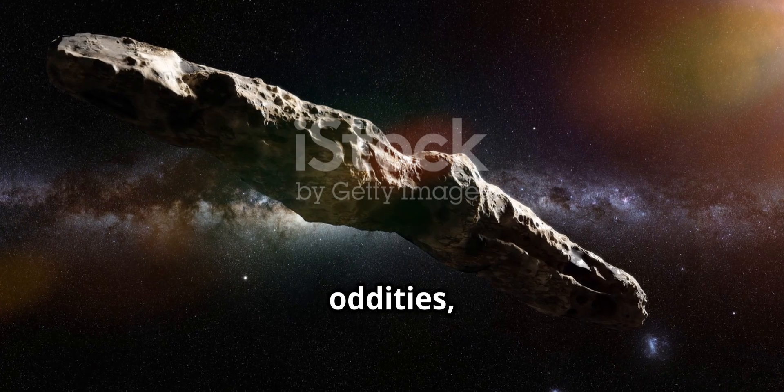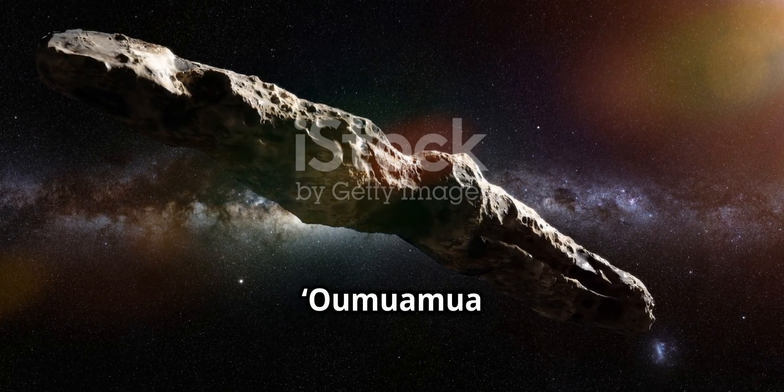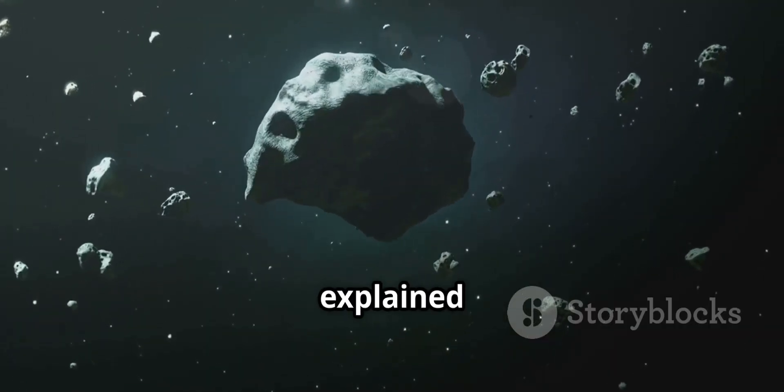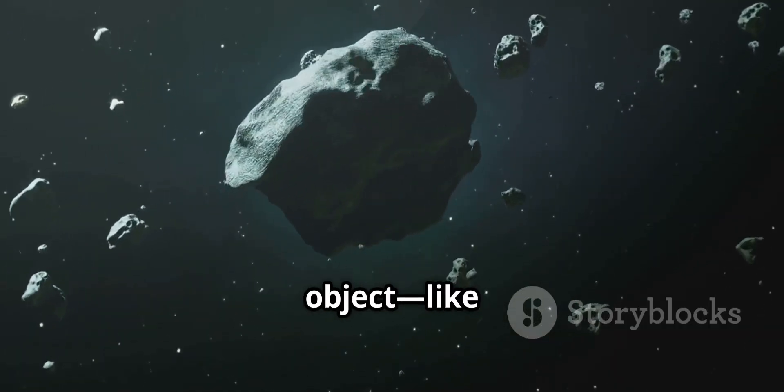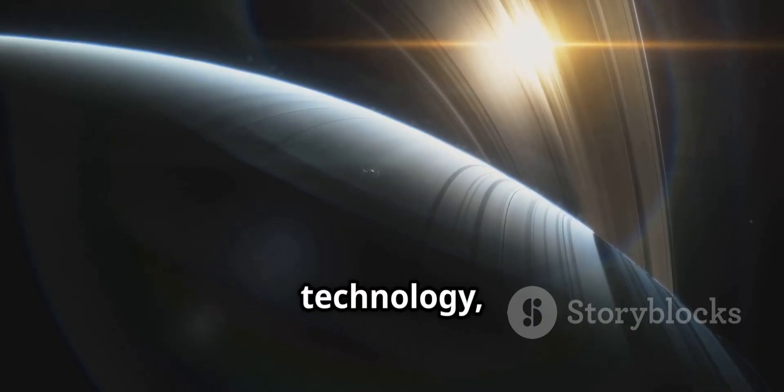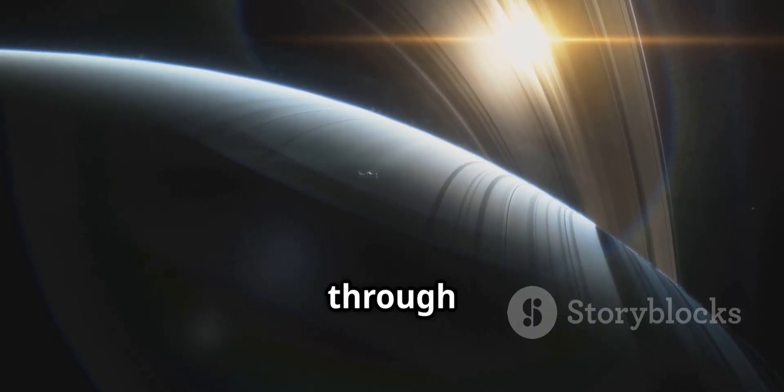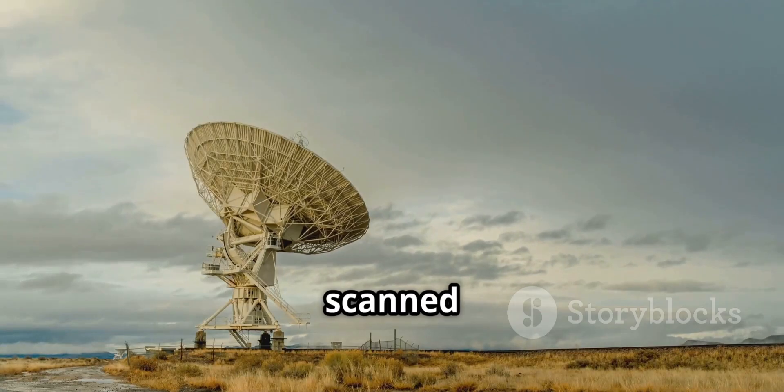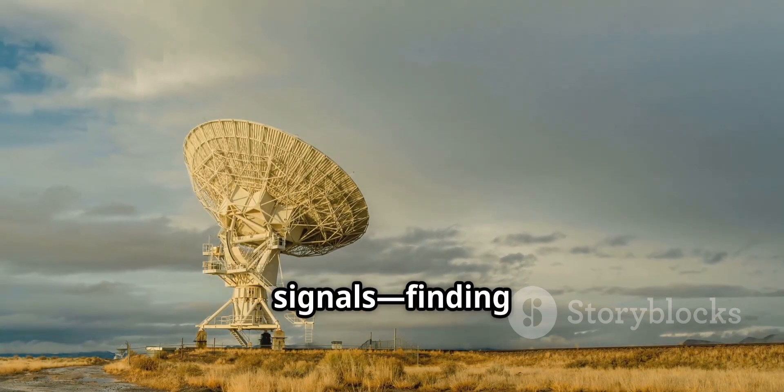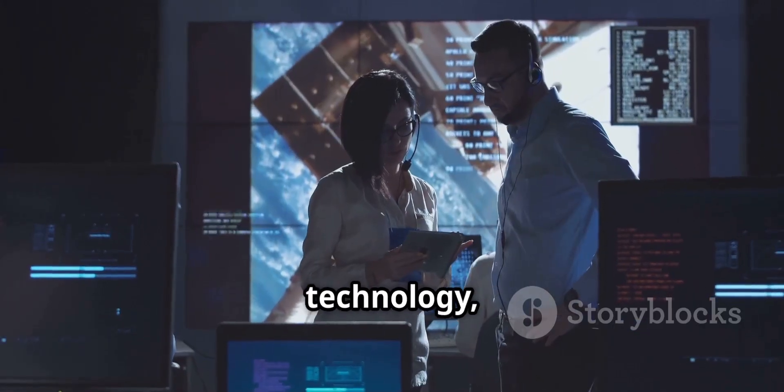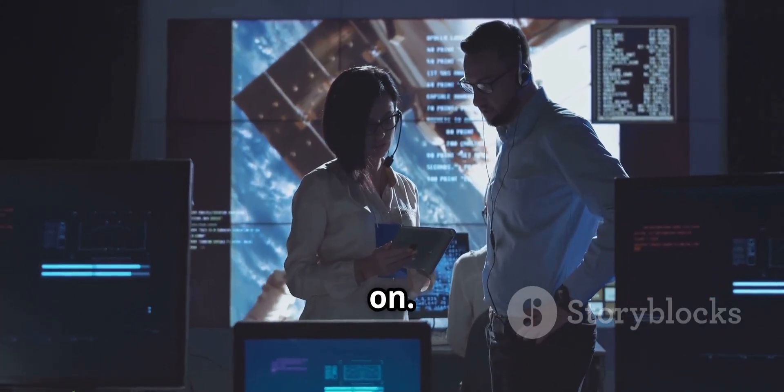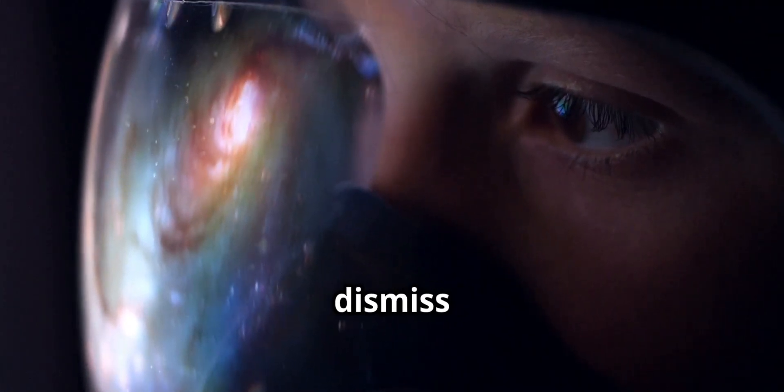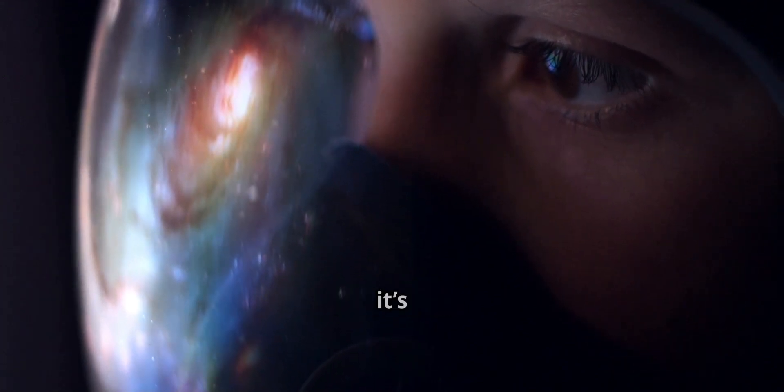With so many oddities, some scientists asked, what if 'Oumuamua wasn't natural? Avi Loeb of Harvard suggested its acceleration could be explained if it were a thin, light object like a solar sail. Maybe it was alien technology, a defunct probe or light sail drifting through space. The idea captured imaginations and headlines. SETI scanned 'Oumuamua for radio signals, finding only silence, no evidence of technology. But the debate was on. Extraordinary claims require extraordinary evidence. Still, Loeb argued we shouldn't dismiss the possibility just because it's unconventional.